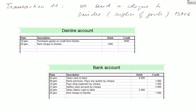Transaction number 11. We sent a cheque to Deirdre, the supplier of goods, for 1,500 euros. We actually owe Deirdre 4,000 euros, so this is a partial payment — usually done to show goodwill and to buy more from Deirdre. We debit Deirdre's account (the creditors account) 1,500 euros, and the bank account is credited 1,500 euros.